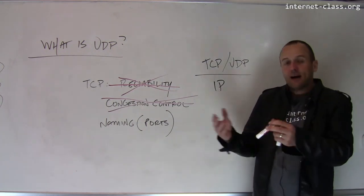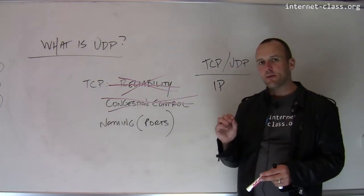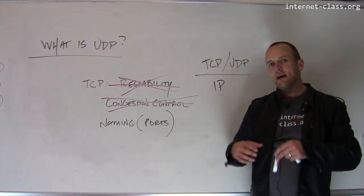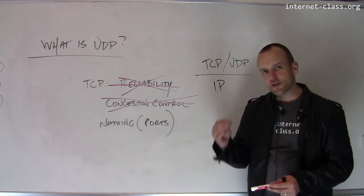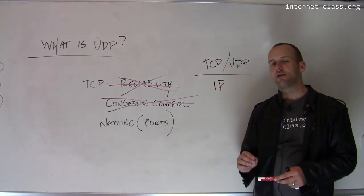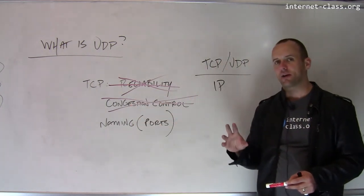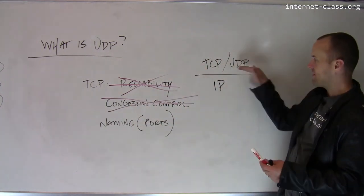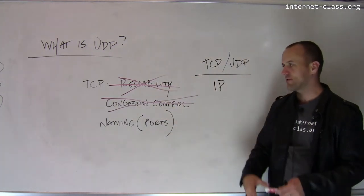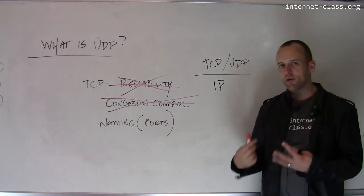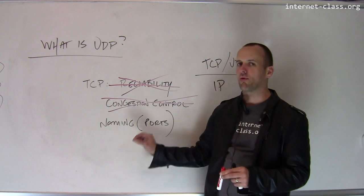So UDP is, on some level, a really thin wrapper on top of IP. That makes UDP useful in certain cases because it's possible to experiment with new transport protocols built on top of UDP. There are also certain use cases where UDP is actually more appropriate than TCP. To summarize: we have TCP and UDP on top of IP — UDP provides no reliability, no congestion control, no guarantees about ordering. It's pretty much just the IP layer with an extra bit of naming in the form of port numbers.